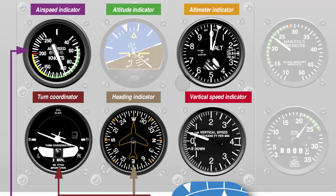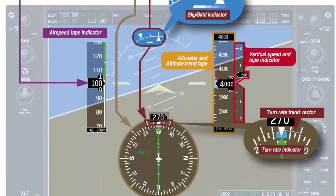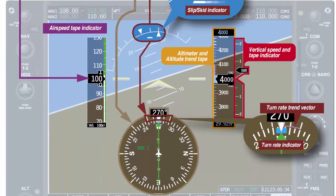Performance instruments indicate the aircraft's actual performance at that time. Performance instruments include the altimeter, airspeed indicator, vertical speed indicator, or VSI, heading indicator, and turn and slip indicator. The performance instruments directly reflect the current performance of the aircraft.